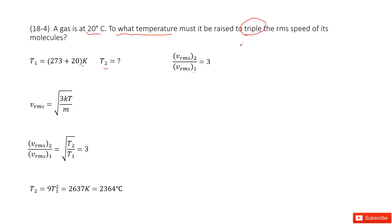Now, can you find T2? Yes. First of all, we look at the rms speed, which is called the root mean square speed. We can find it in this function. We can see that k is a constant, the mass of the gas molecules is fixed, and the only variable is T. So the root mean square speed has a linear relationship with the square root of T.